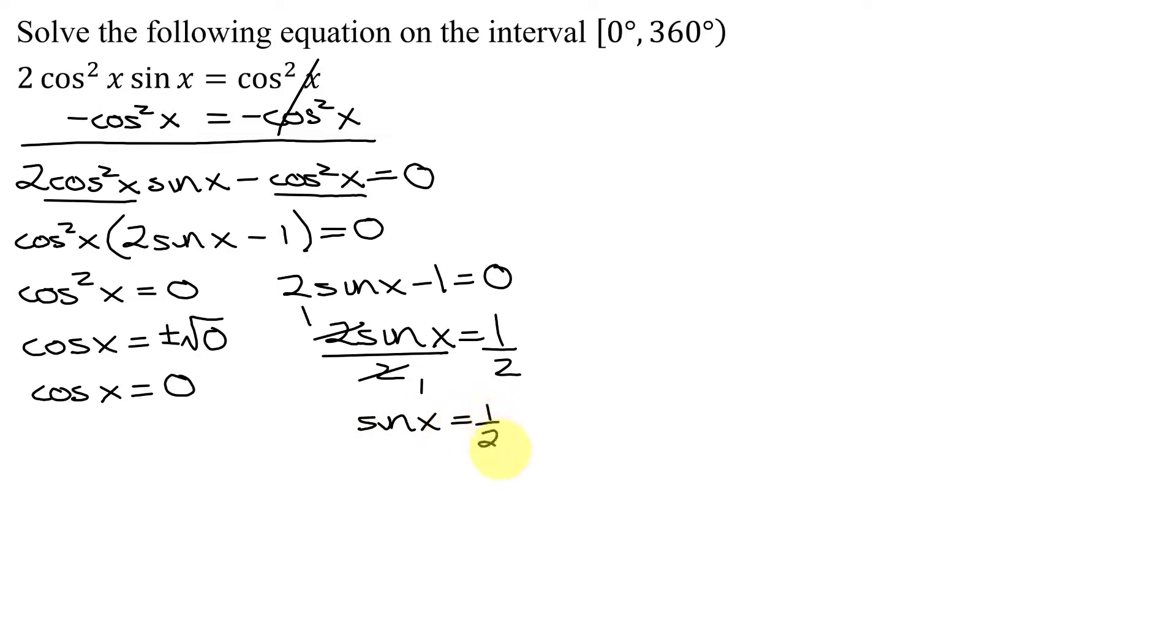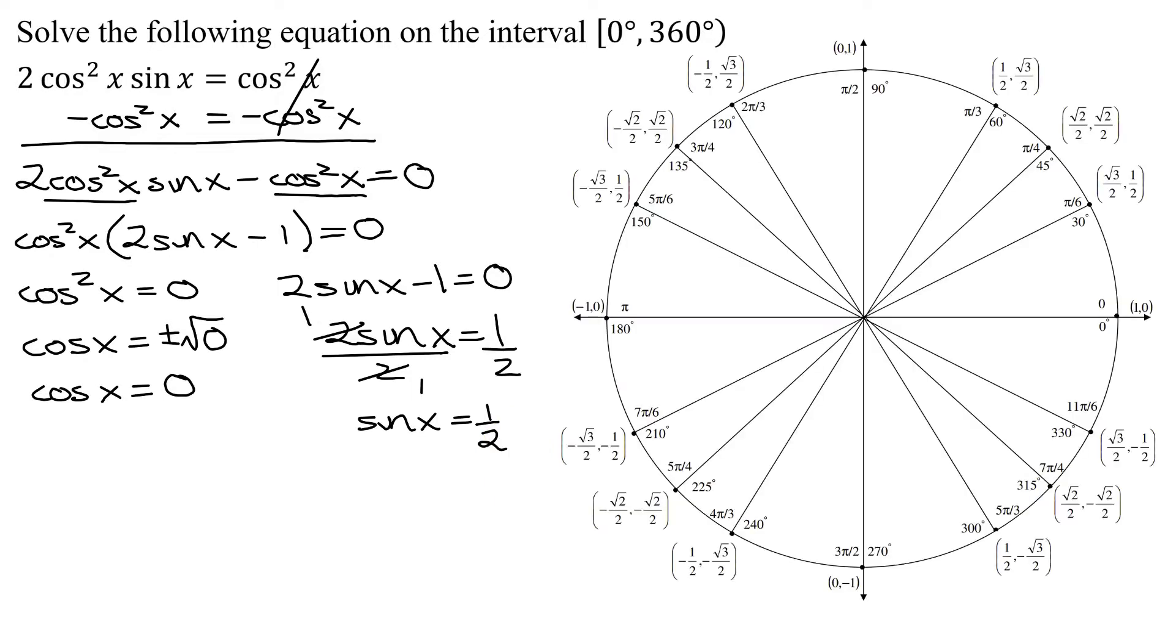So now I'm going to need to use my unit circle. Here's my unit circle. My first solutions are going to come from when the cosine of x equals zero. Remember, for all points on the unit circle, the x-coordinate is the cosine of theta and the y-coordinate is the sine of theta. So cosine x equals zero means I need to look for x-coordinates that are zero.